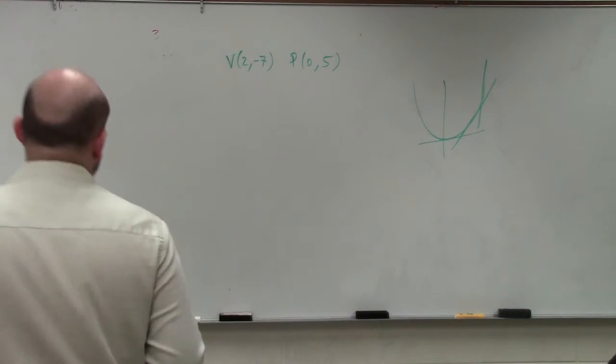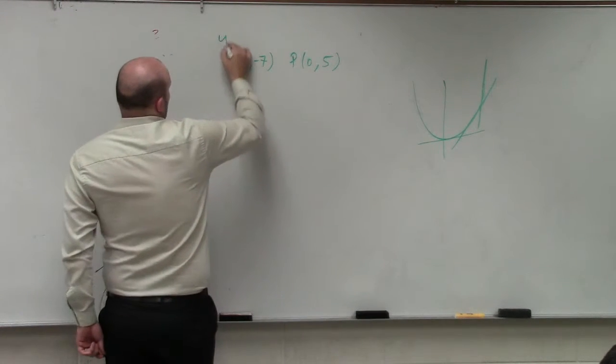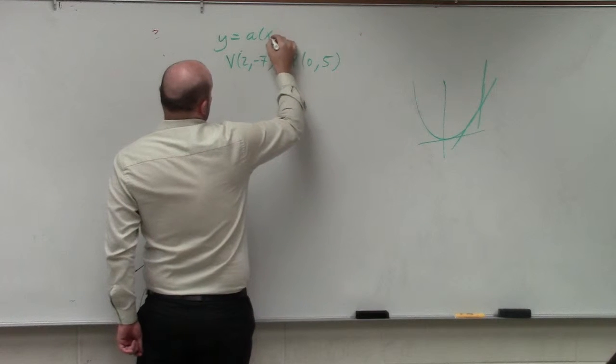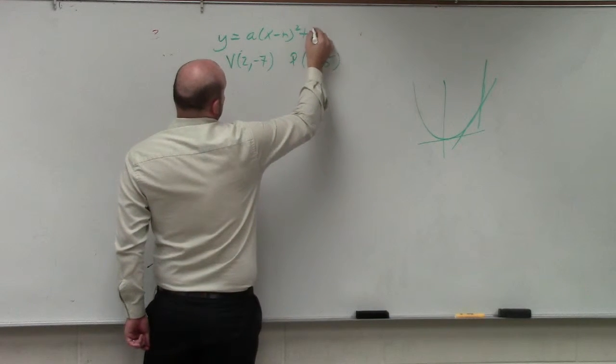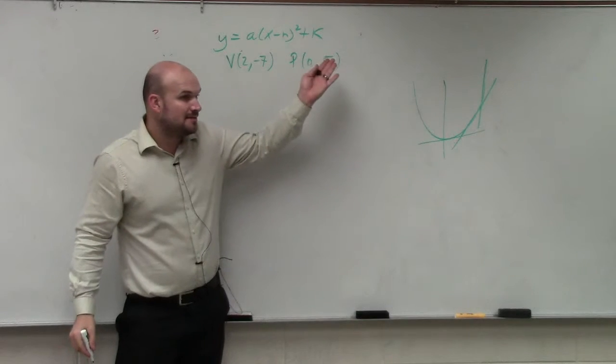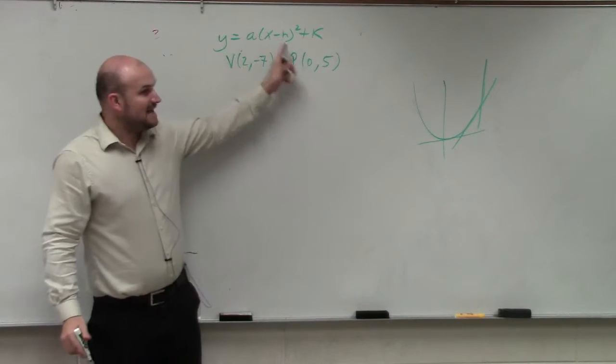But remember, the quadratic, I gave you guys a vertex form. I said y equals a times x minus h squared plus k. To write the equation in this format, all you need to know is a, h, and k.